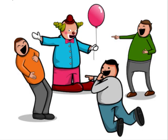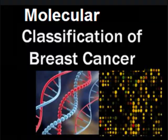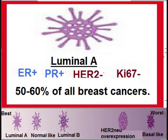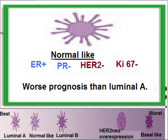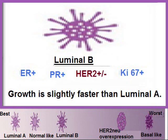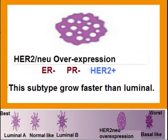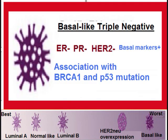There are minor factors, and one of them is molecular classification of breast cancer. Every morphology is subjected to immunohistochemistry. Luminal A is 50–60% of all breast cancer and has the best prognosis — it is ER/PR positive, HER2/neu negative, and KI-67 negative. Luminal B grows slightly faster than Luminal A. Then there is HER2/neu overexpression, which grows faster than luminal carcinoma.